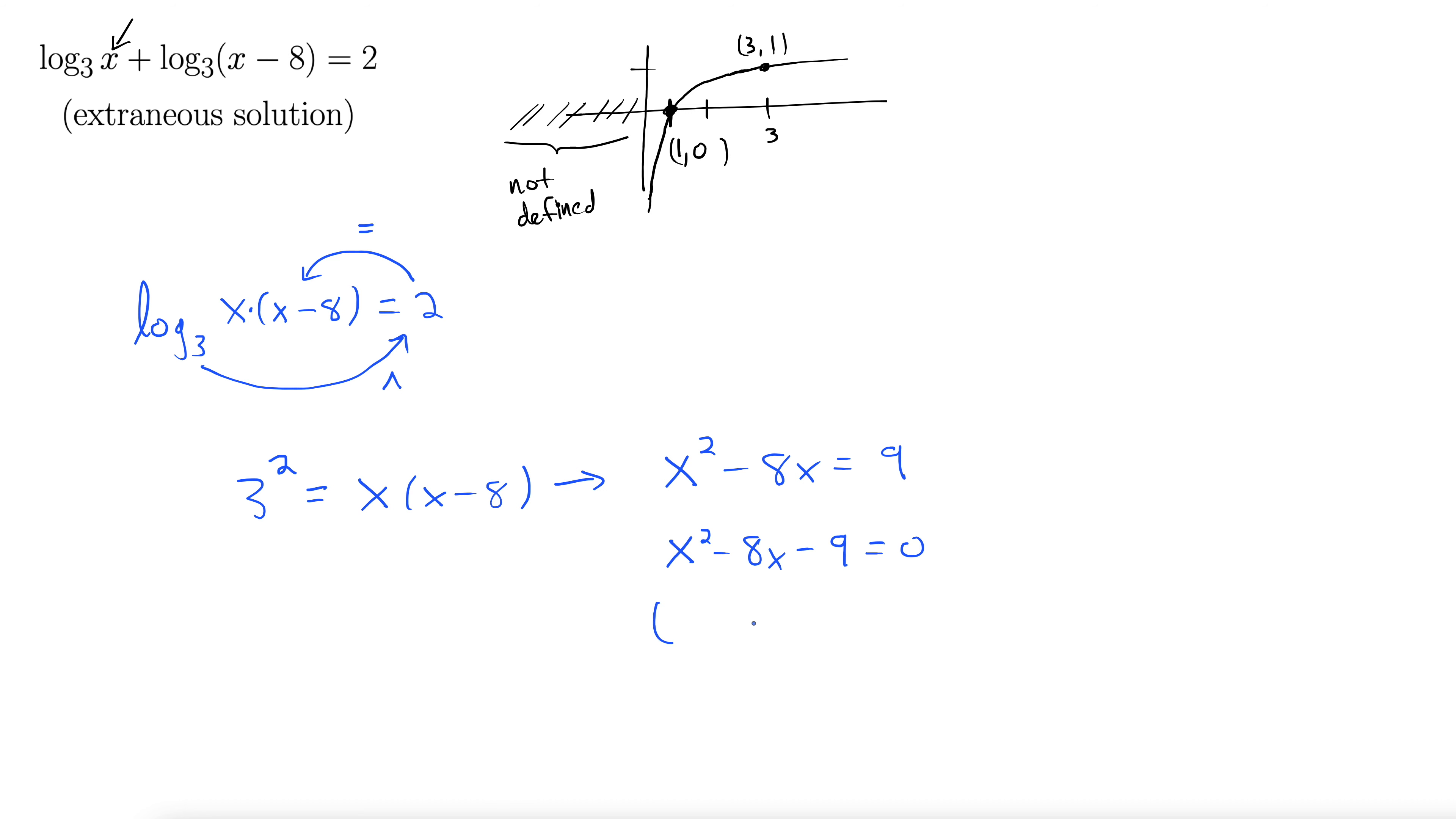This trinomial is factorable. Thank goodness. We don't need the quadratic formula or anything fancy like that. So let's see here. I'm thinking minus 9 plus 1. So setting each of those equal to 0 gives us x equals 9, x equals minus 1.